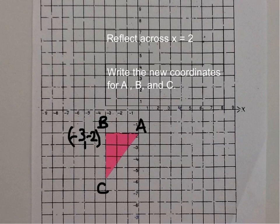A is now at the point of 0, negative 2. And C is at the point negative 3, negative 6.